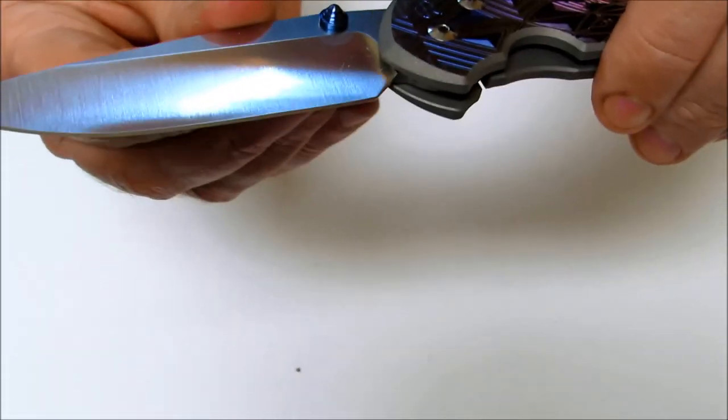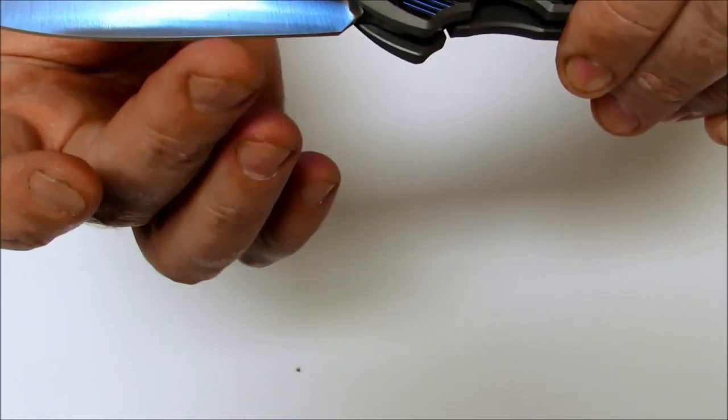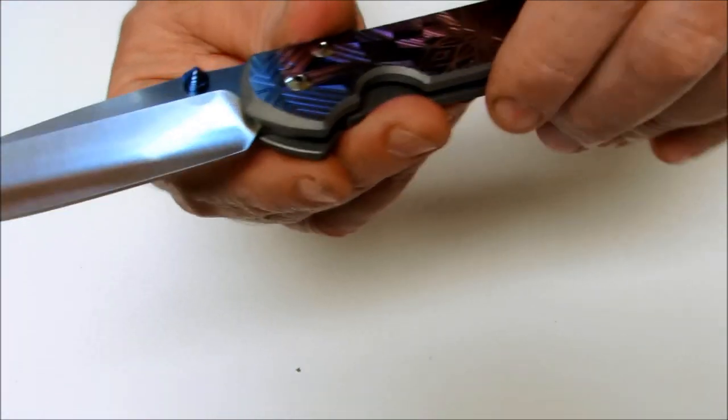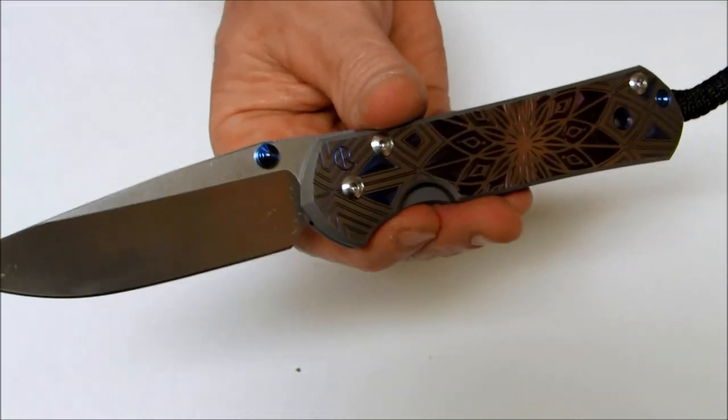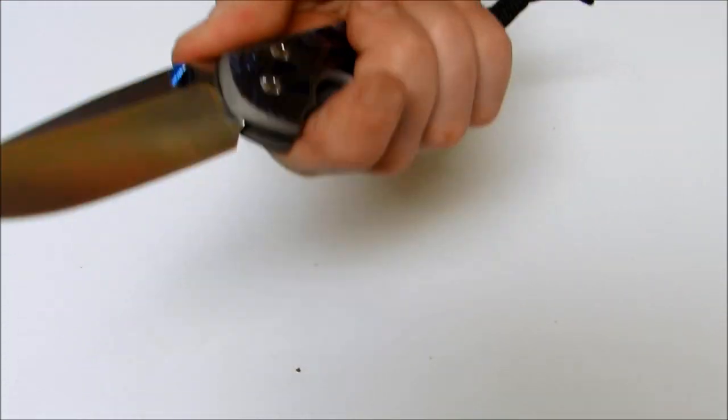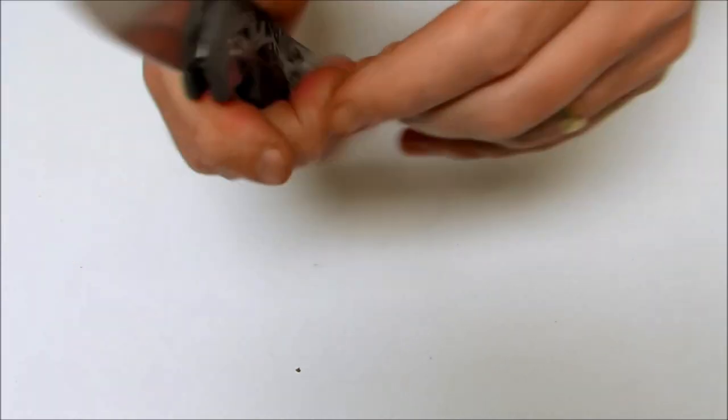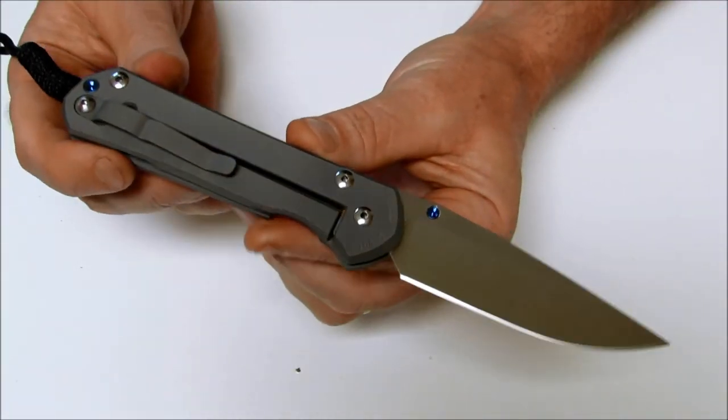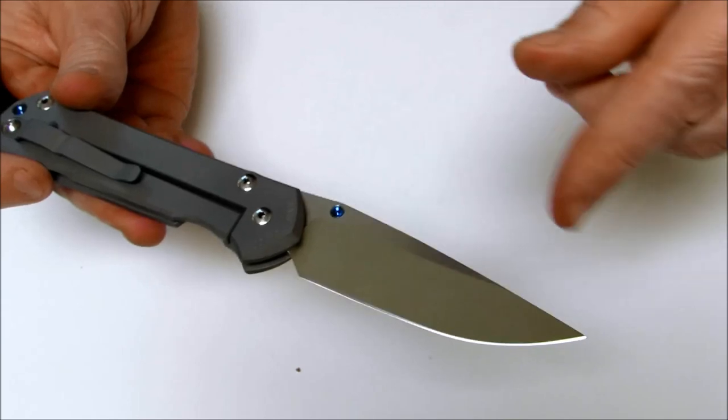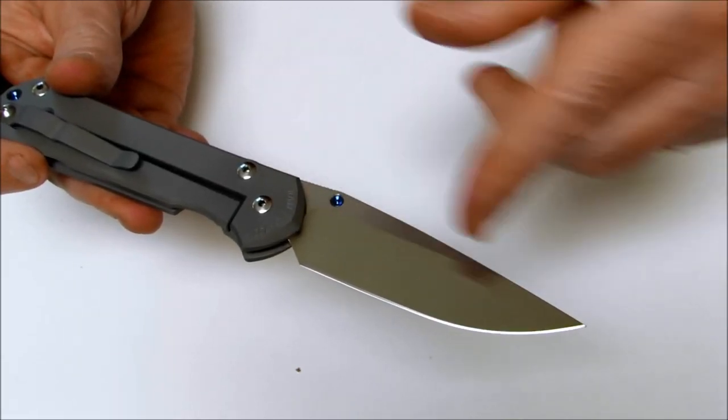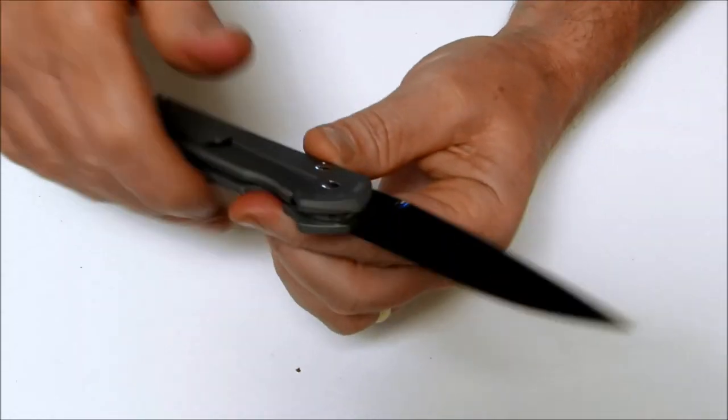You have a drop point style blade with a high hollow grind. The blade steel is the premium CPM S35VN stainless steel. It's been hardened to 58 to 59. The blade length on this model measures in at 3.625 inches.